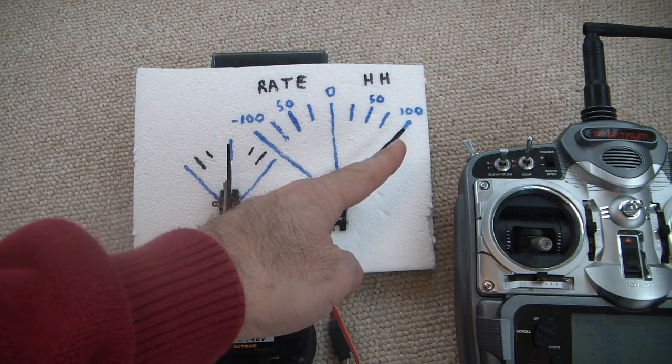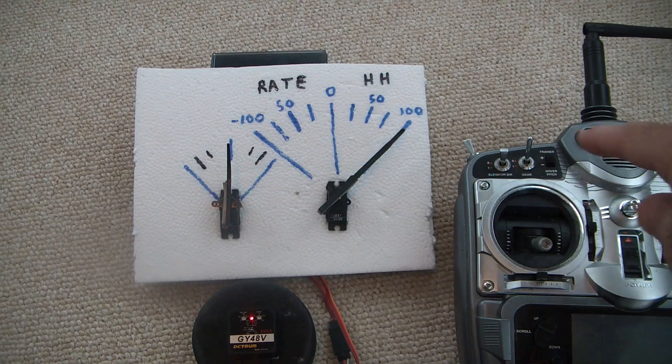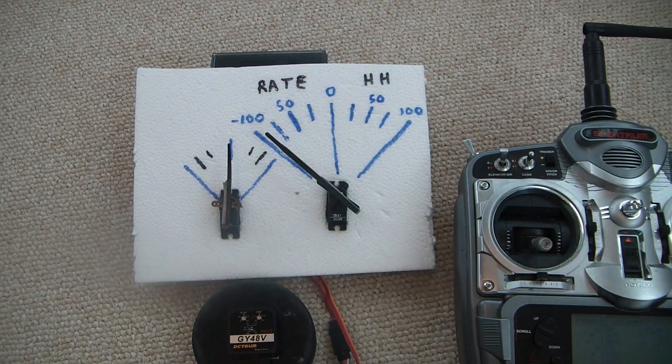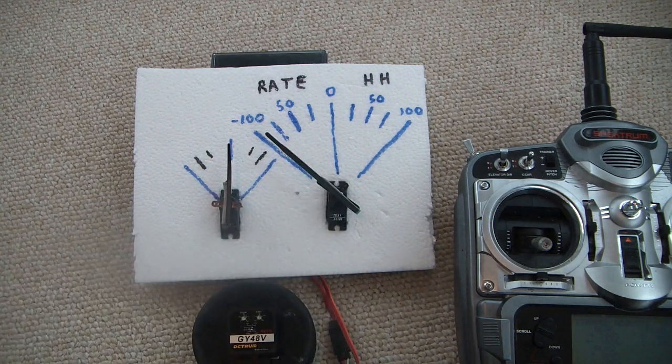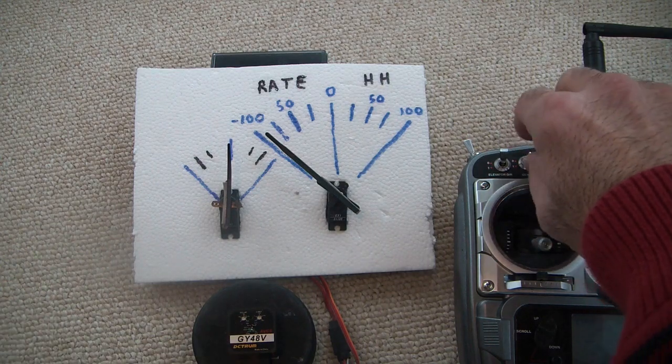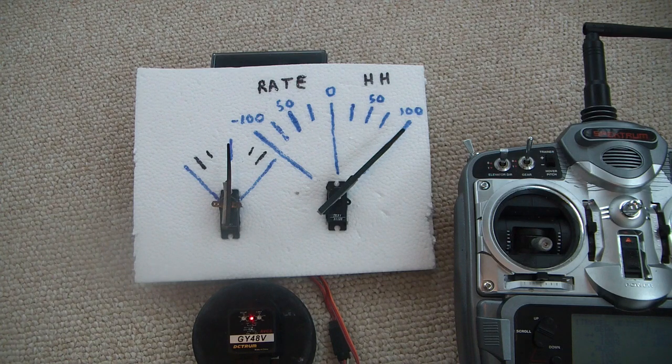So in the full clockwise position, that's positive 100% for the gear, and this is negative 100%. So when the servo is in this direction, it is in rate mode and the light is off on this gyro. And when it's fully to the right, it is in heading hold mode.